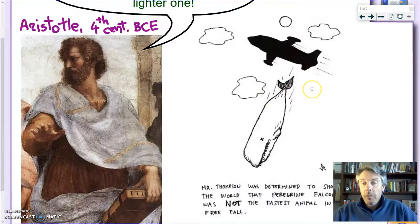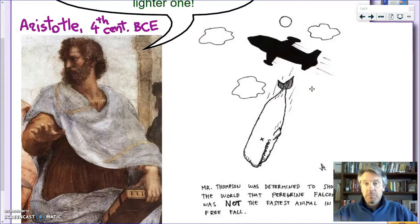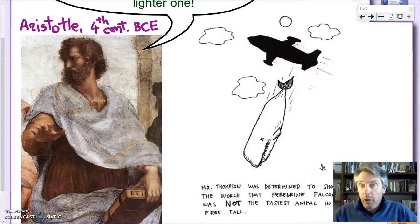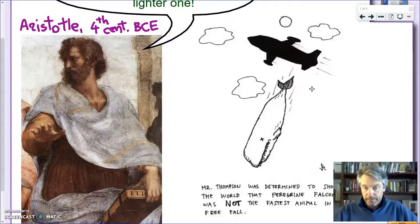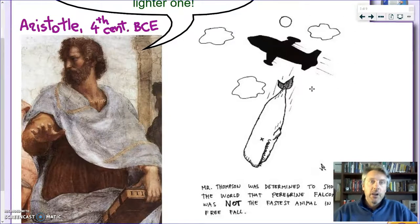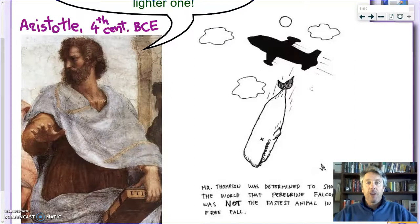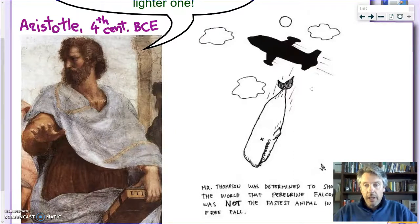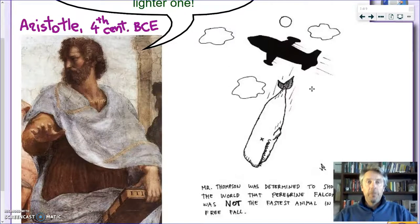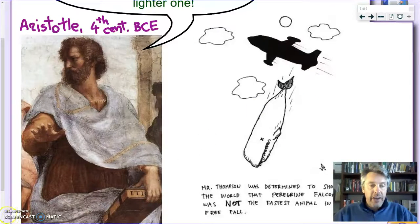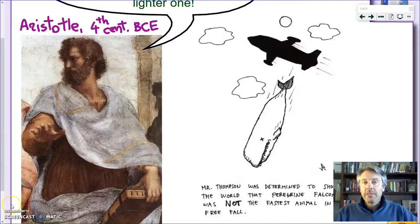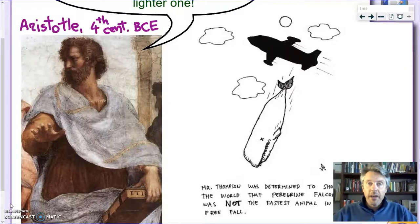For instance, what if I take the blue whale, which is the largest animal on Earth, and just bring it up with an airplane and just drop it? According to Aristotle, the blue whale will go faster than the peregrine falcon. Now, apart from the technical difficulty of convincing a blue whale to get into an airplane, and any possible ethical implication of dropping a blue whale, especially if it's on an area which is full of houses, we know that this is not the case. The blue whale, yes, will fall very, very fast, but not as fast as the peregrine falcon. So, there must be something else. It's not just the weight that affects the acceleration which you fall under gravity.